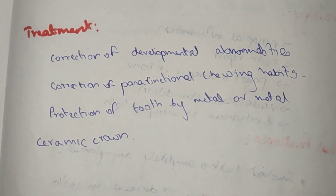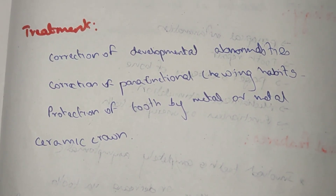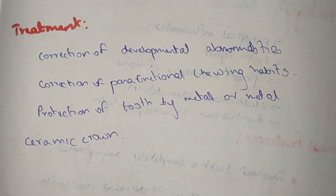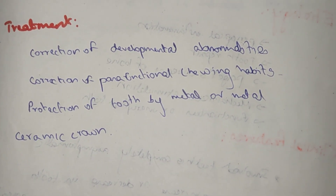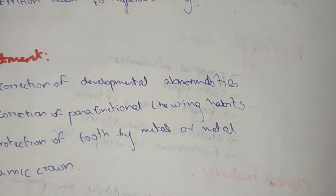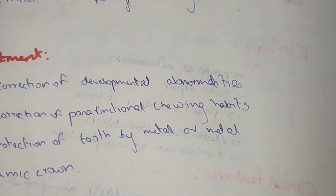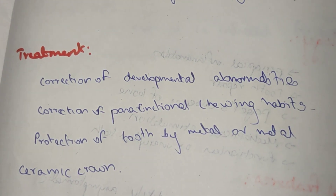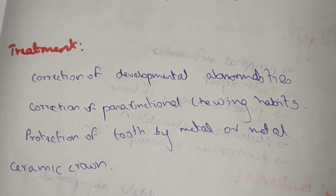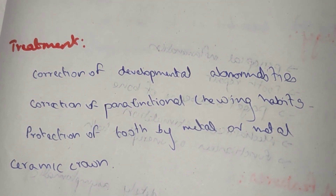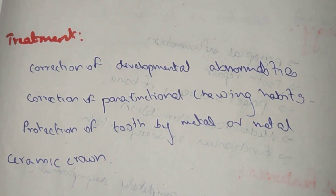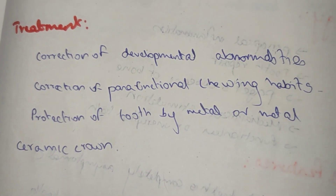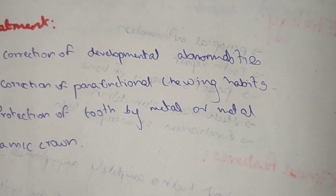Treatment includes correction of developmental abnormalities such as amelogenesis and dentinogenesis imperfecta, correction of parafunctional chewing habits like bruxism, and protection of the tooth using a metal or metal-ceramic crown when there is exposed dentin or pulp. These are the treatments of choice for attrition.